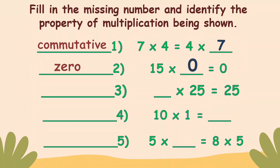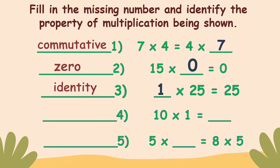Number three: blank times 25 equals 25. The missing number is one. And the property is identity property.